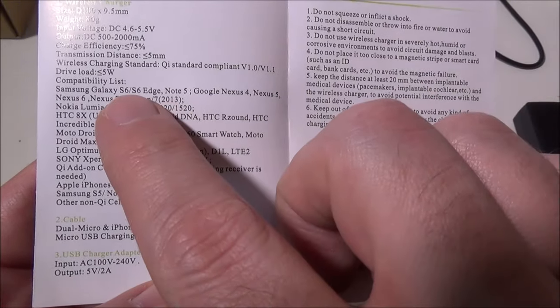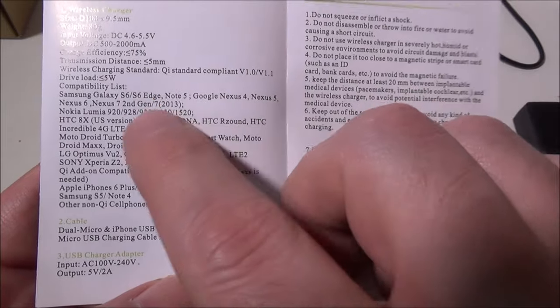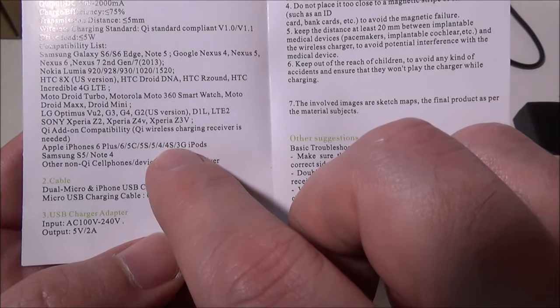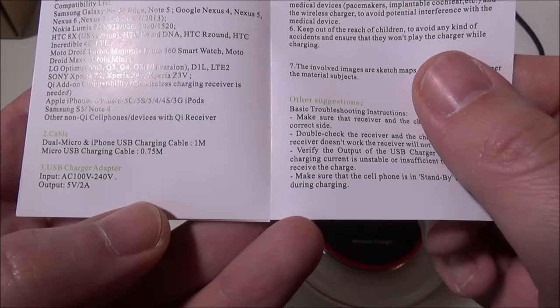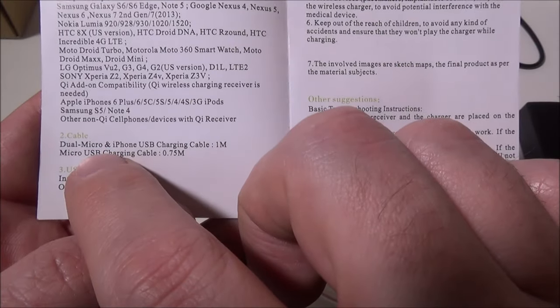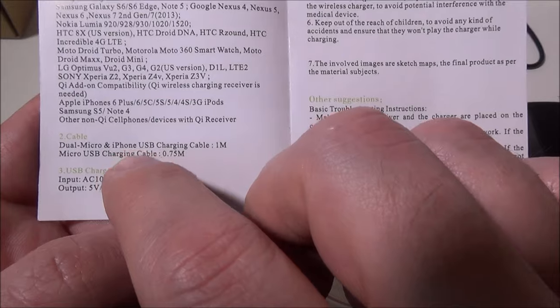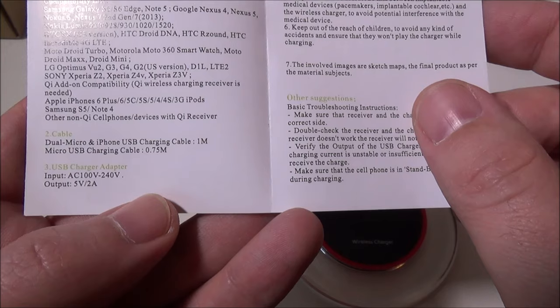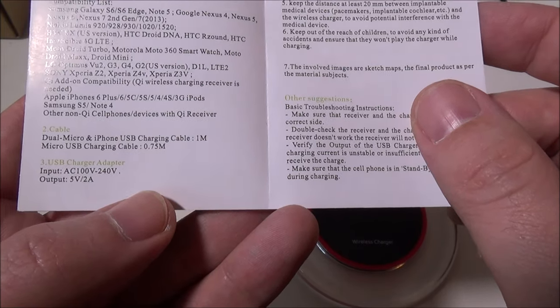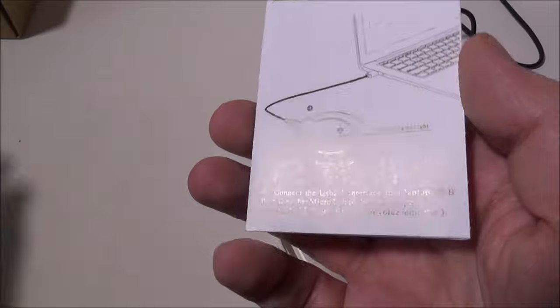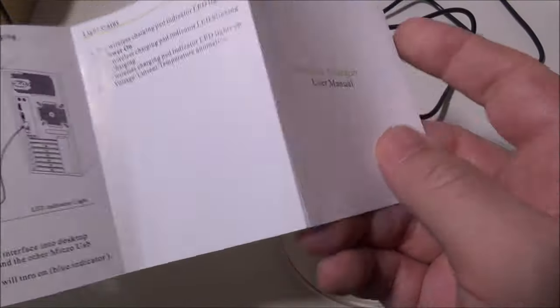List some of the compatibilities. The S6, S6 Edge, and the Note 5 are on there already. Some of the other ones that you will need to add a receiver like the Note 4, which I have. And then they will give you this dual micro and iPhone USB charging cable. It's a one meter cable. And then the micro USB charging cable, which is 0.75 meters, which you see here. So you will get this extra cable with it. So that's actually pretty cool that they bundled this in.